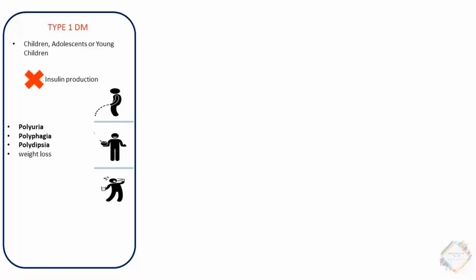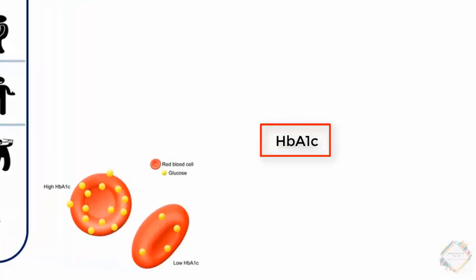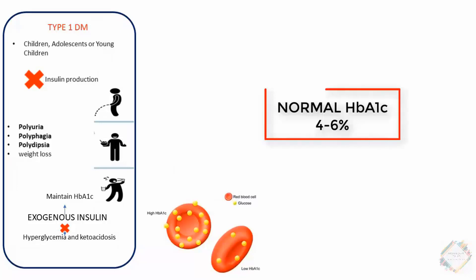The treatment for Type 1 Diabetes Mellitus is to replace the deficient insulin by providing exogenous insulin, which avoids hyperglycemia and ketoacidosis and helps to maintain HbA1c. HbA1c, or glycosylated hemoglobin, is the amount of glucose attached to the hemoglobin. The normal HbA1c range is 4 to 6 percent. Values above this range indicate hyperglycemia or Diabetes Mellitus; below it indicates hypoglycemia.